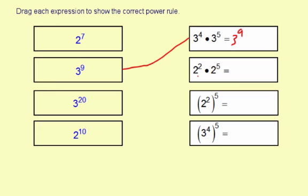The same rule applies to this one. Same base and you're multiplying, so it's going to be 2 to the 2 plus 5th power, or 2 to the 7th power.